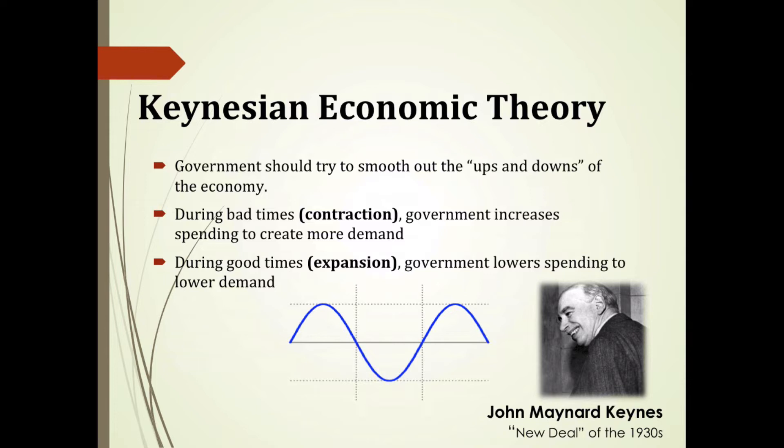During bad times, or what economists refer to as contraction, the government should increase spending to create more demand — like adding hot water to a cold bath, raising the temperature to keep you more comfortable. Conversely, during good times, or expansion, the government should lower spending to reduce demand, so as not to overheat an already hot economy. The big takeaway with Keynes' economic theory is to allow the government to either heat things up when they are cold or cool things off when they are too hot, while the market still operates accordingly.